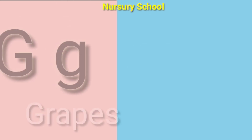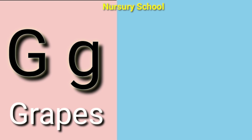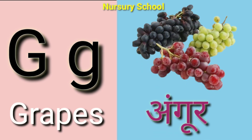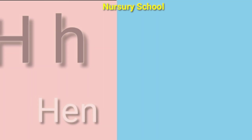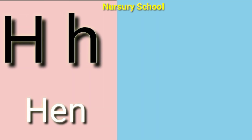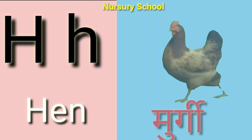G for grapes, grapes means angoor. H for hen, hen means murgi.